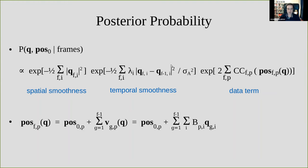With these three terms together we construct our posterior probability. First, the spatial smoothness term, given by the lengths of the coordinate vectors Q. Second, the temporal smoothness term, which penalizes large deviations especially in the important components in successive frames. Third, the data term: the exponential of twice the sum of cross-correlations. The cross-correlations must be evaluated at the positions of the particles, which requires integrating up the motion of each particle up to that frame. With time in units of one frame, the position of particle P in frame F equals its position in the first frame plus the sum of its velocities up to that frame, represented in basis B using coefficients Q.